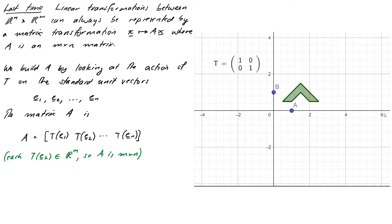To help us visualize this, I've built a GeoGebra applet that lets us explore the effect of specifying where the two basis vectors e1 and e2 are mapped to. Point A is where vector e1 ends up, and point B is where vector (0,1) — that's e2 — ends up after the transformation. As I move these points, the columns of the matrix T vary accordingly.